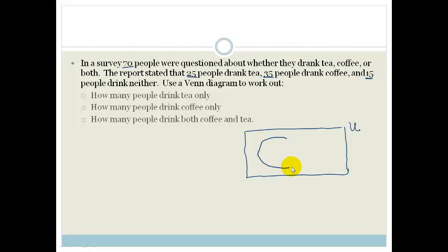I have a circle for the tea drinkers and I have a circle for the coffee drinkers. Now my universal set is made out of 70 people, so our total sample set we know is 70 people. We know that 15 people don't drink either tea or coffee. So I can put them out here.